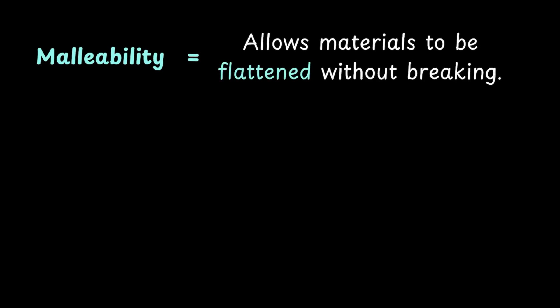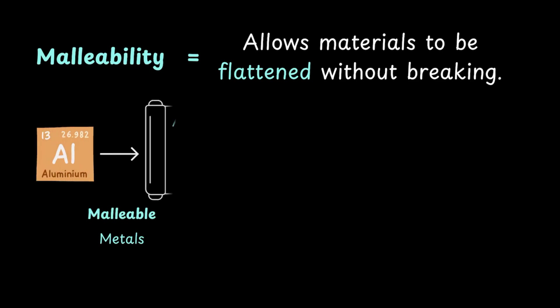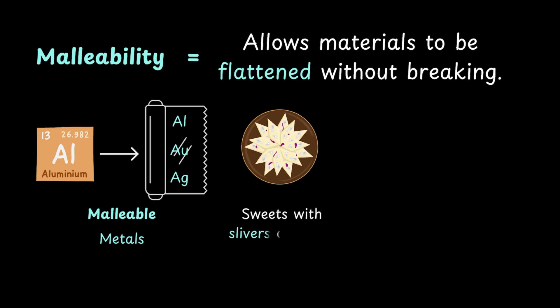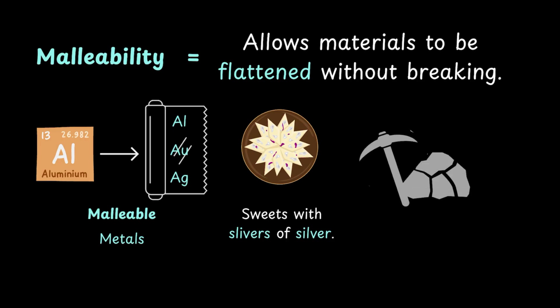Next, let's talk about malleability. Malleability is a property that allows materials to be flattened without breaking. Turns out, metals are malleable, and that's why you can make aluminium foils out of aluminium. We can also have silver and gold foils. Ever seen those shiny sweets with slivers of silver? That's real silver, beaten into super thin foils. But take something like coal or sulphur – a gentle tap with a hammer is enough to shatter them into pieces. This happens because unlike metals, non-metals are brittle.